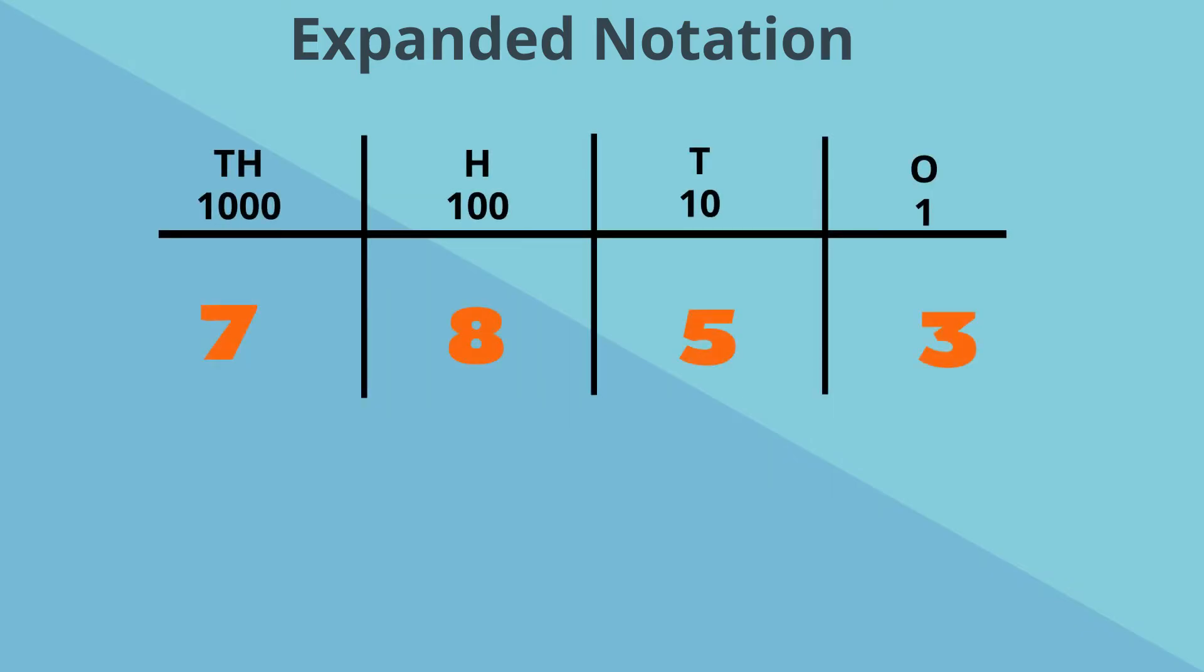Now we are going to break it down. We multiply or extend each digit based on which place value position they are in. Let's look at the number again. 7 is in the thousands column, so 7 represents 7 multiplied by 1000.